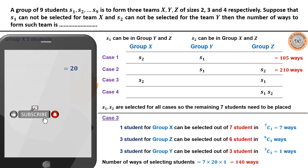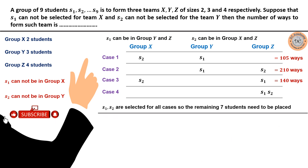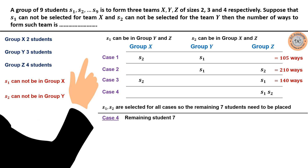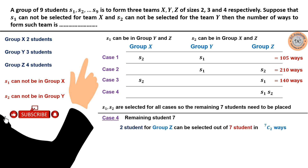For Case 4, both S1 and S2 are in group Z, and any student can fill group X and group Y. Seven students remain. Group Z needs four students and already has S1 and S2, so two more are selected from seven remaining students in 7C2 ways.